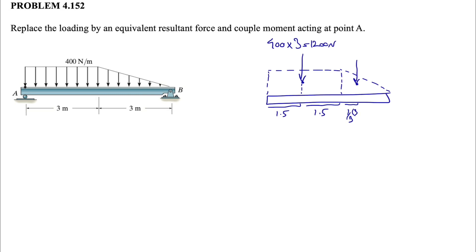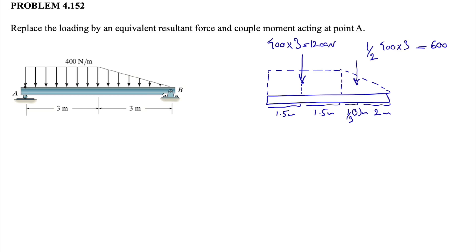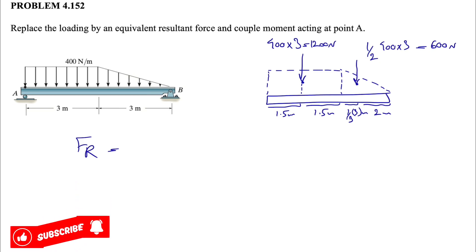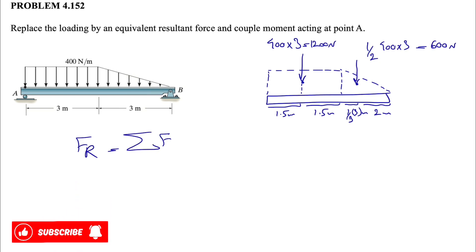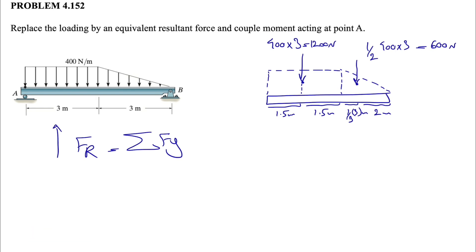For the right triangle on the right side, the centroid is at one third of the base from the right, which is one meter from the right end, so the distance from point A is two meters plus one third. The force for the triangle is half of 400 times three, which gives us 600 N.